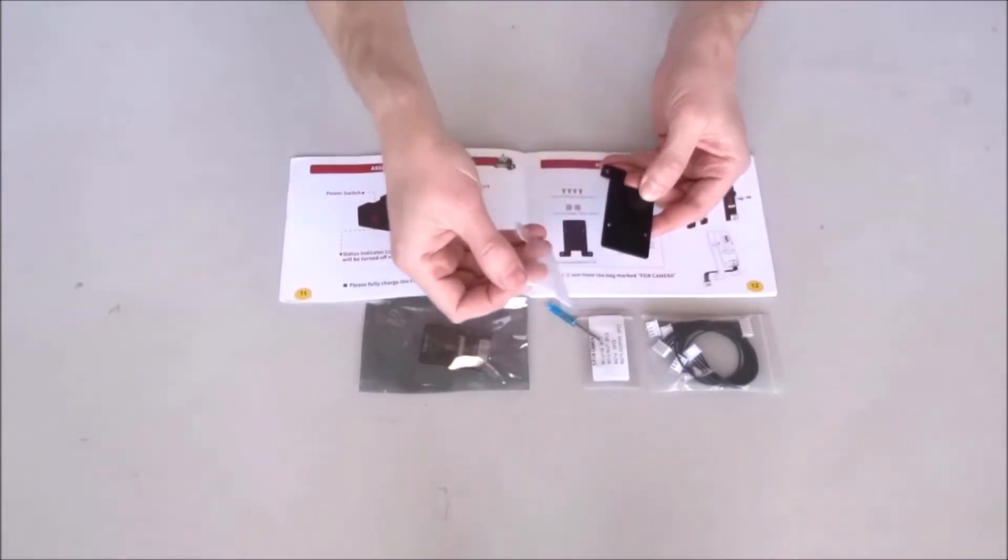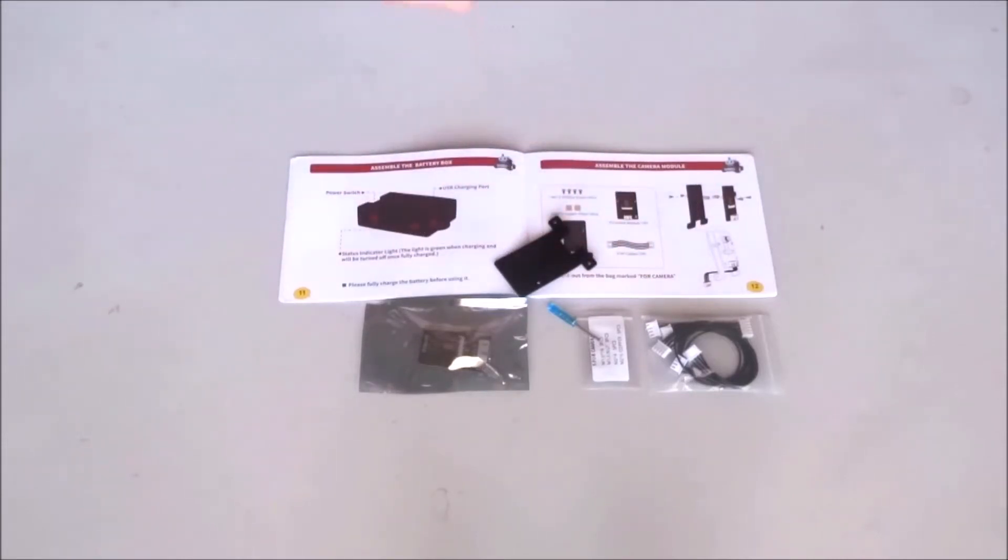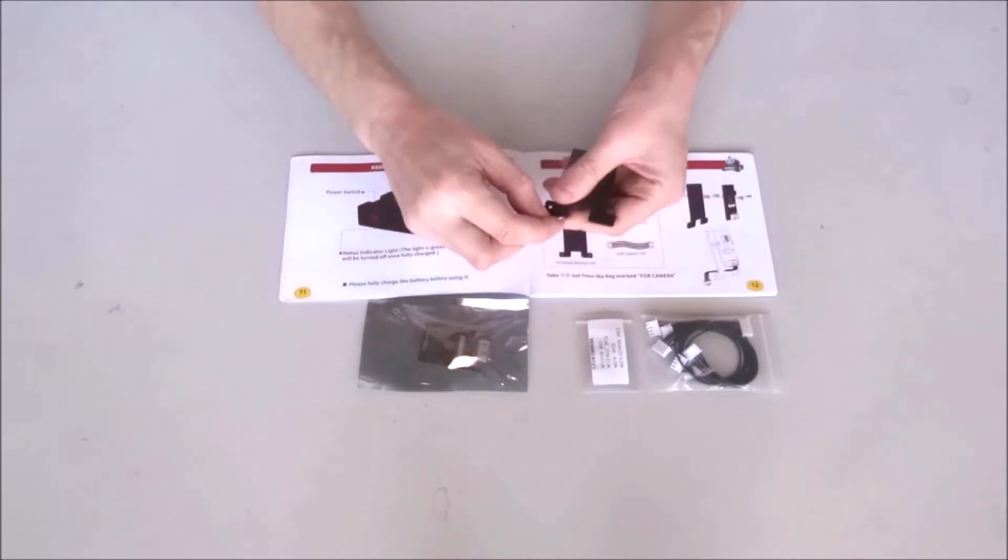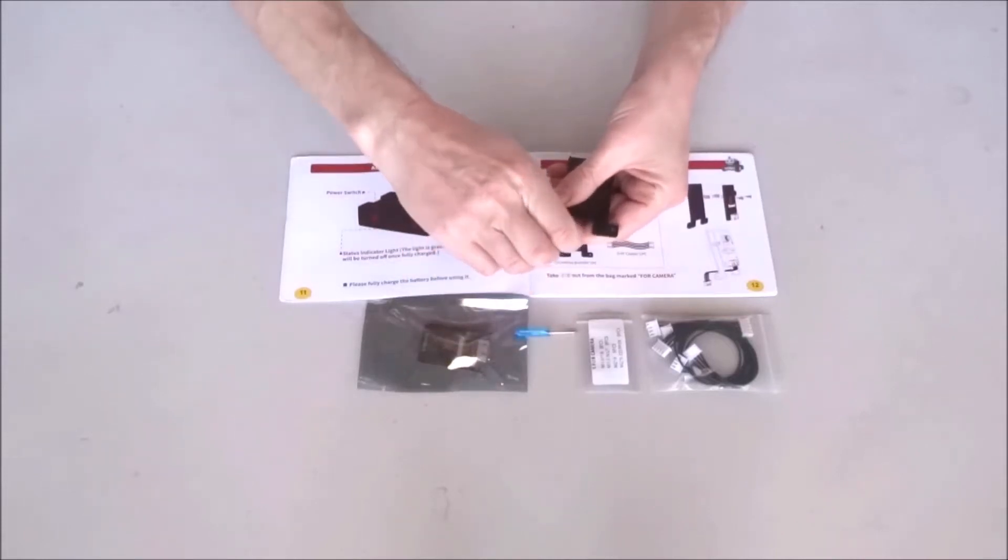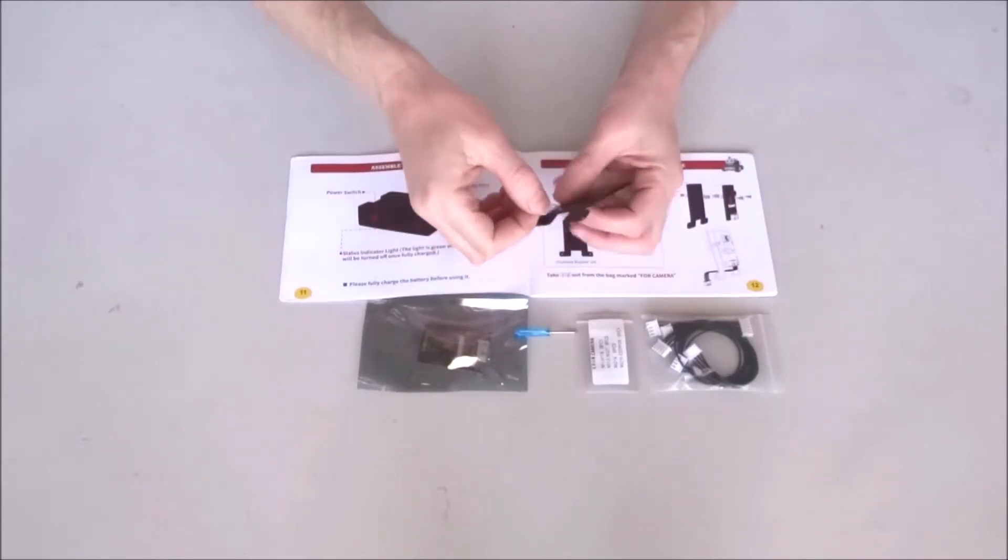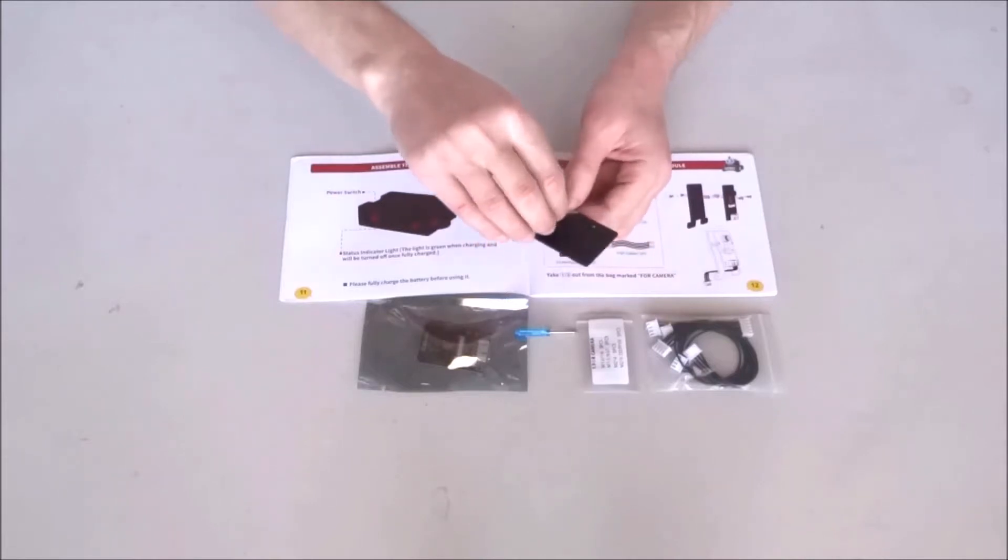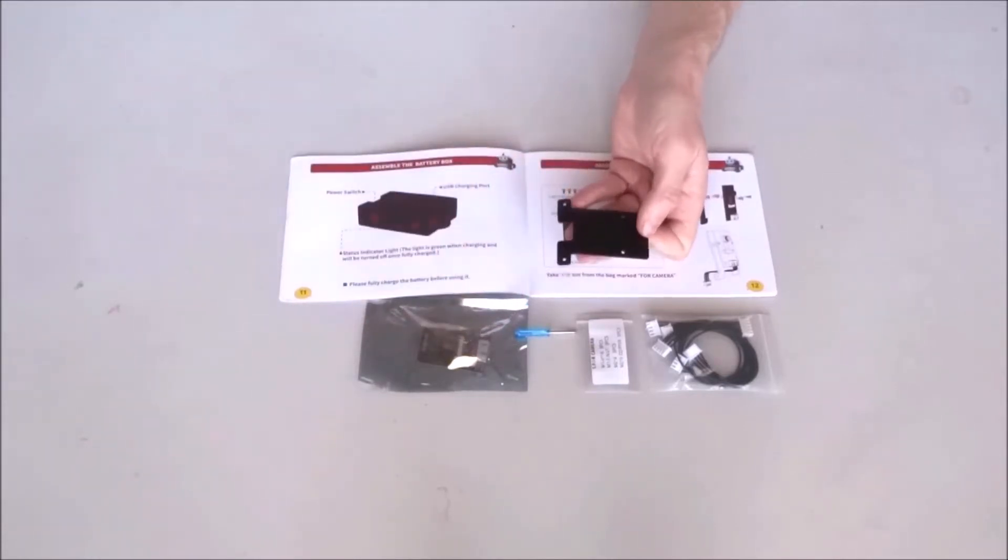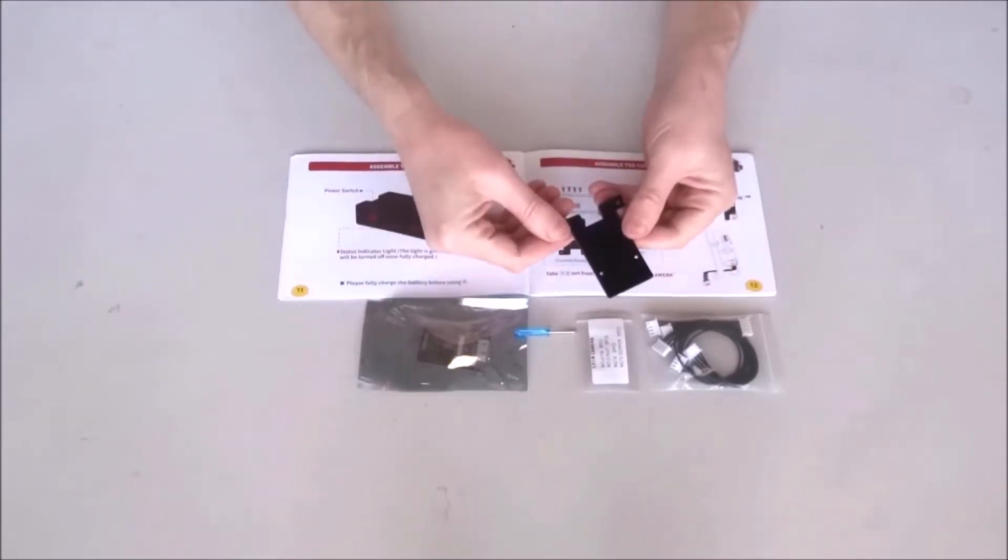So first step is to carefully remove the protective layer on both sides. Starting from some corner, if needed, using some tool to help us start peeling. Now the plastic is nice and shiny.